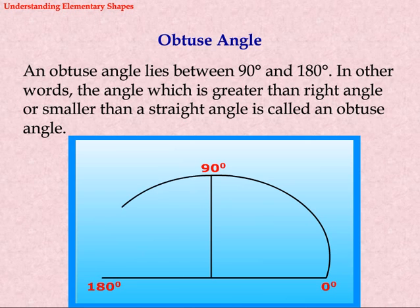Obtuse angle: An obtuse angle lies between 90 degrees and 180 degrees. In other words, the angle which is greater than a right angle but smaller than a straight angle is called an obtuse angle.